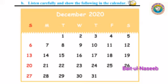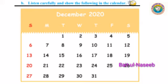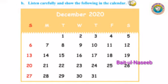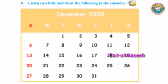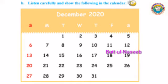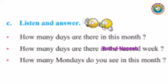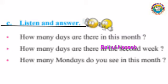listen carefully and show the following in the calendar. अब यहाँ पर महीने दिसेंबर का आपको एक calendar दिया हुआ है. अब इससे related question number C दिया हुआ है. Listen and answer.